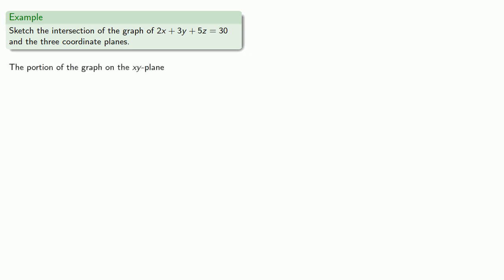The portion of the graph on the xy plane—well, remember the xy plane has equation z equals zero. Equals means replaceable, and so our equation becomes 2x plus 3y equals 30.